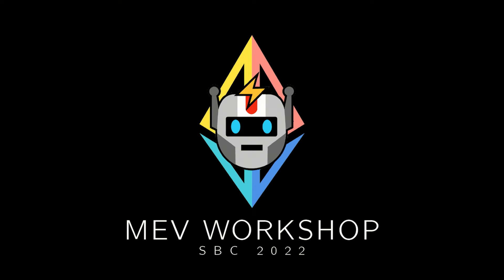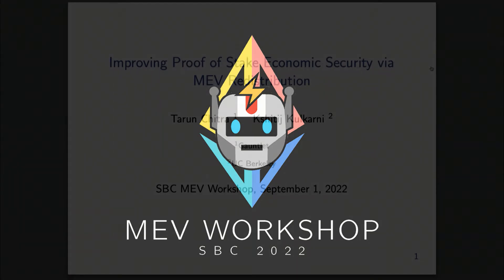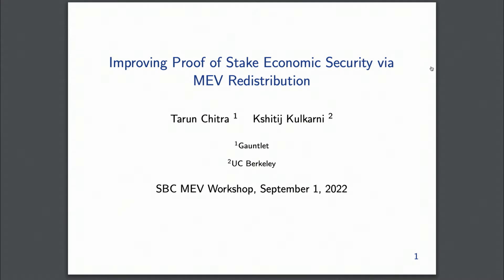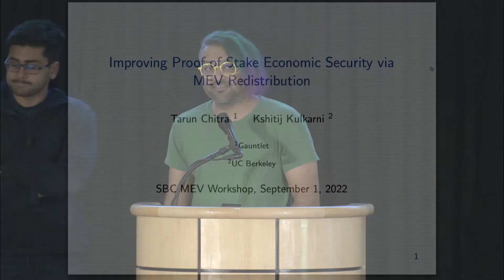We're going to talk about something related to dynamic fee collection — specifically how proof-of-stake security can be related to how much MEV you can redistribute. And quite counter-intuitively, you can actually have significantly lower inflation rates and subsidy rates.